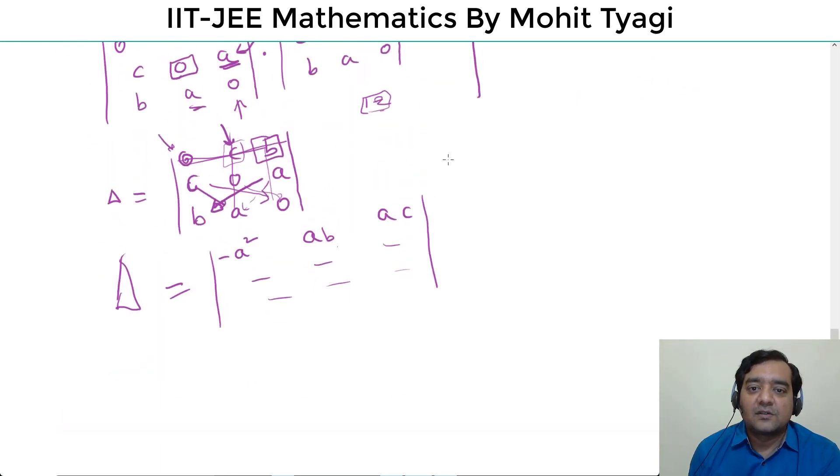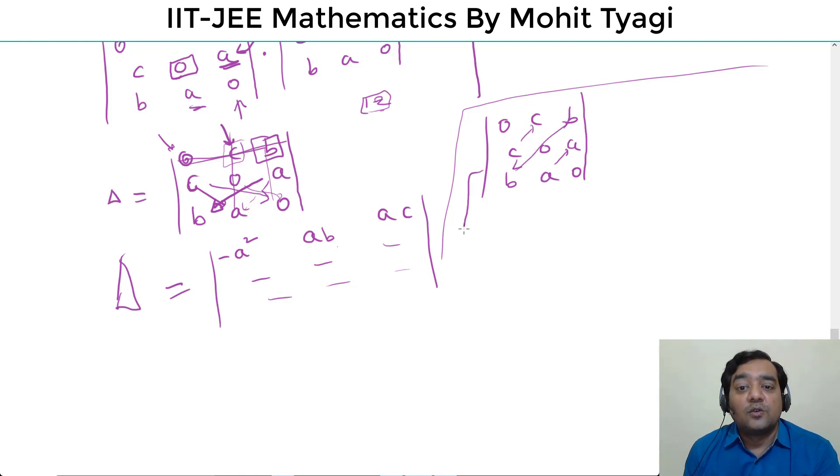We can calculate them from the original determinant. So 0 c b, c 0 a, b a 0. You can see this is symmetric: these two together, c c, b b, and b. So at the beginning we asked for some important determinant values. We can actually evaluate them. These two, what do we have to do with a, b, c?